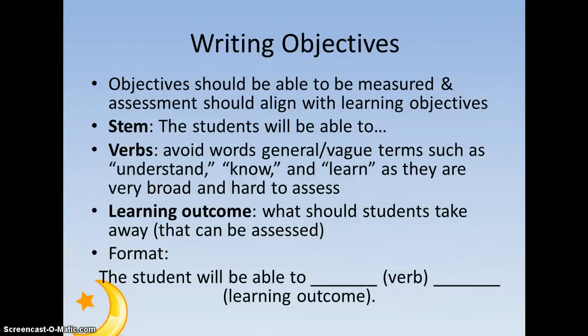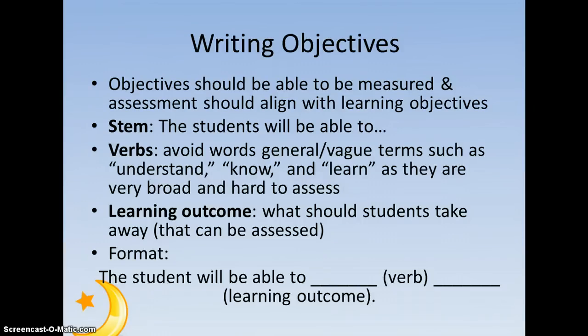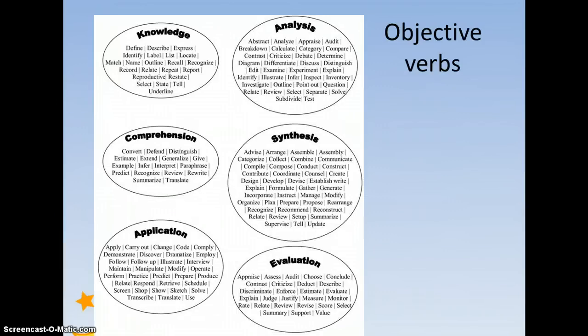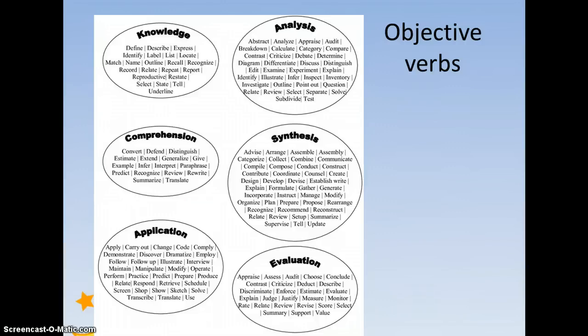After your verb, you want some type of learning outcome — what should students take away that can be assessed. So the format would be: the student will be able to [verb] [learning outcome]. As mentioned previously, 'the student will be able to compare and contrast' serves as the verb, and 'living and non-living things' is the learning outcome. There are specific objective verbs that are more precise than vague terms like 'know,' 'understand,' or 'learn,' and this is a resource to help you when writing your objectives for science.